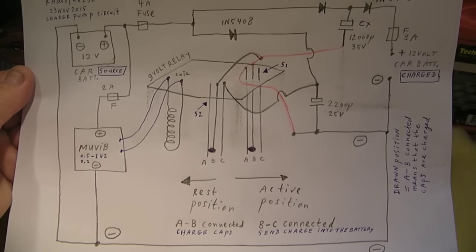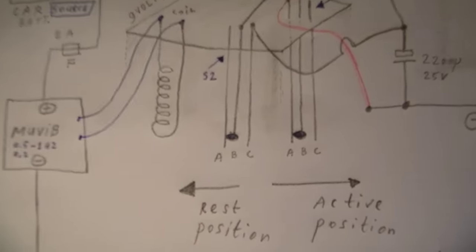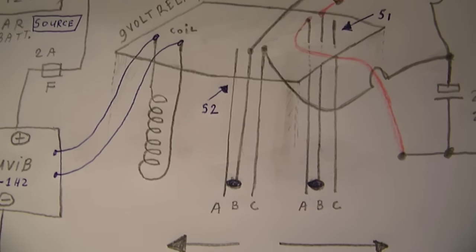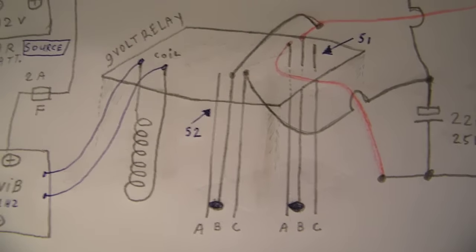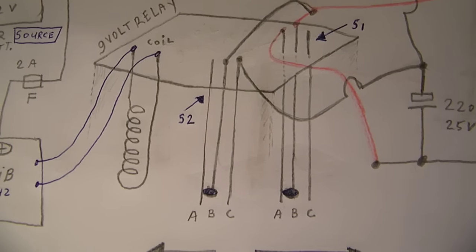In a rest position, the relay contacts move to one side to make a connection from A to B. And in the active position, the connection is made between B and C.